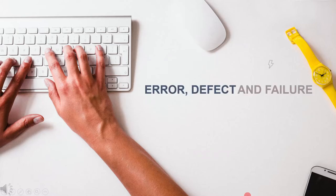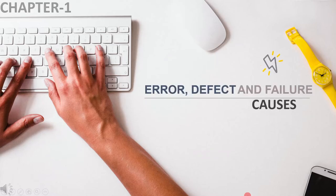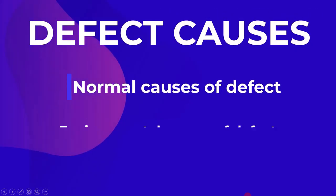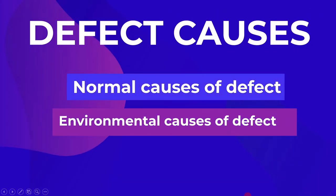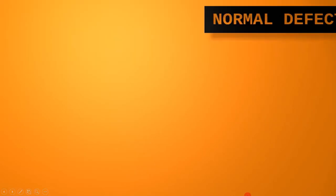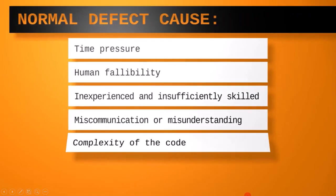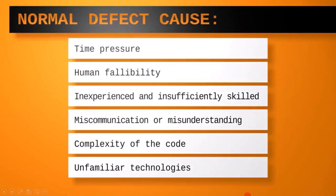In this lecture, we will discuss the different causes of defects. There are two main defect causes: normal causes of defect and environmental causes of defect. First, we will have a look into the normal defect causes.